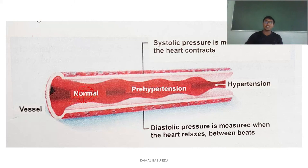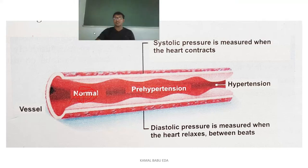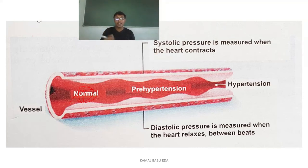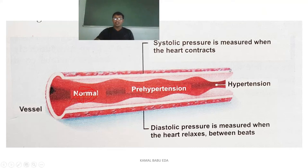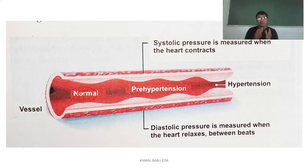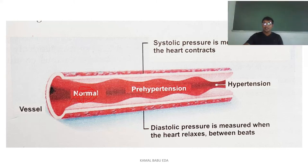When it is normal the pathway is very wide, but in pre-hypertension it has decreased a little bit, and in a hypertensive state the pathway becomes very narrow. This increases vascular resistance, which ultimately leads to increased blood pressure. Any value beyond 120/80 is termed as hypertension.